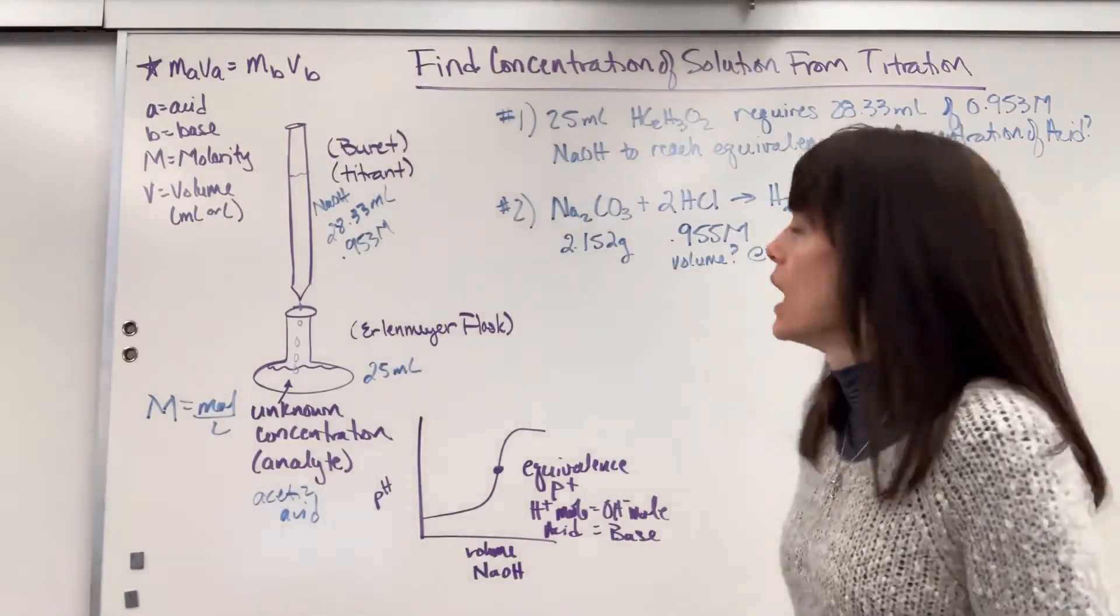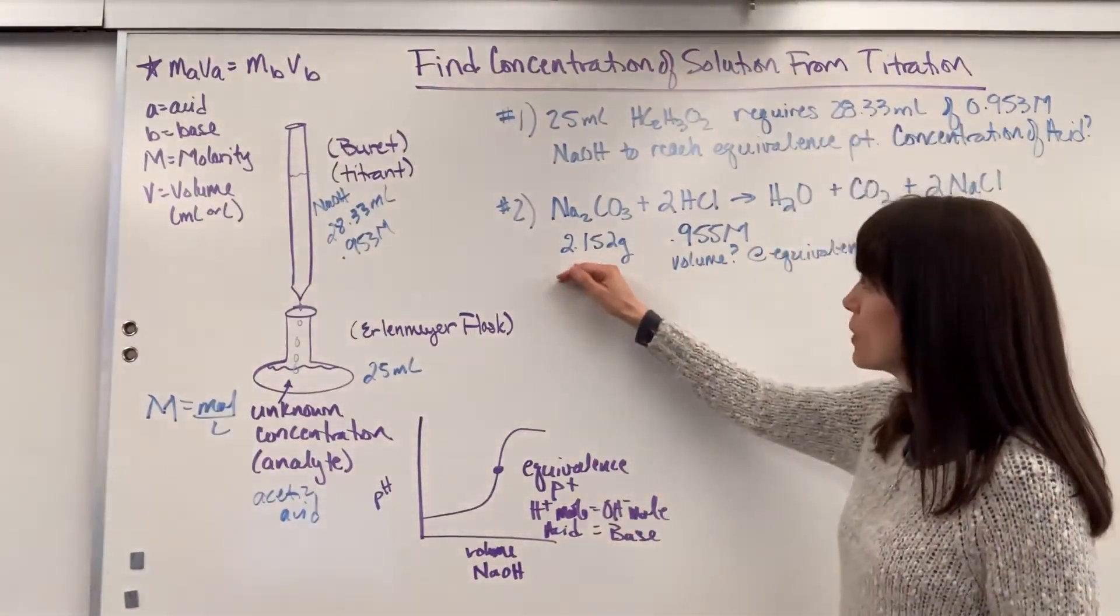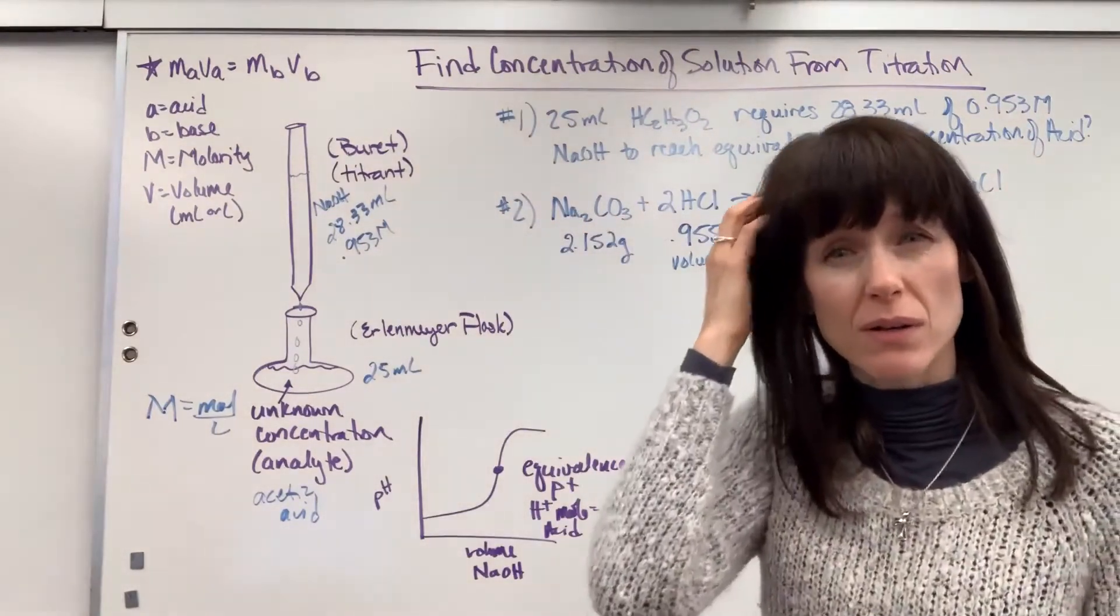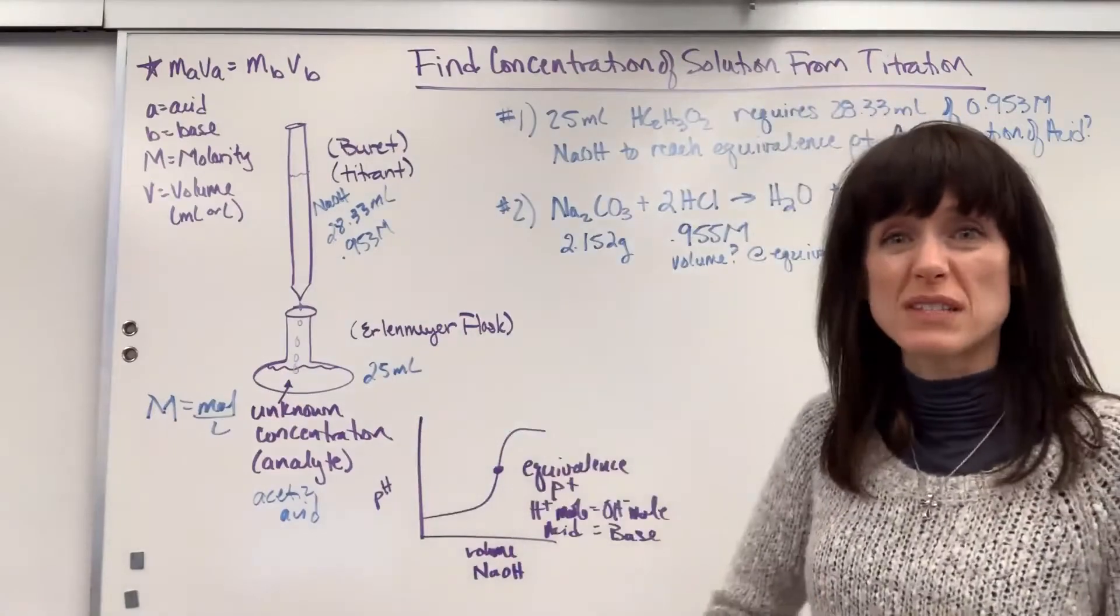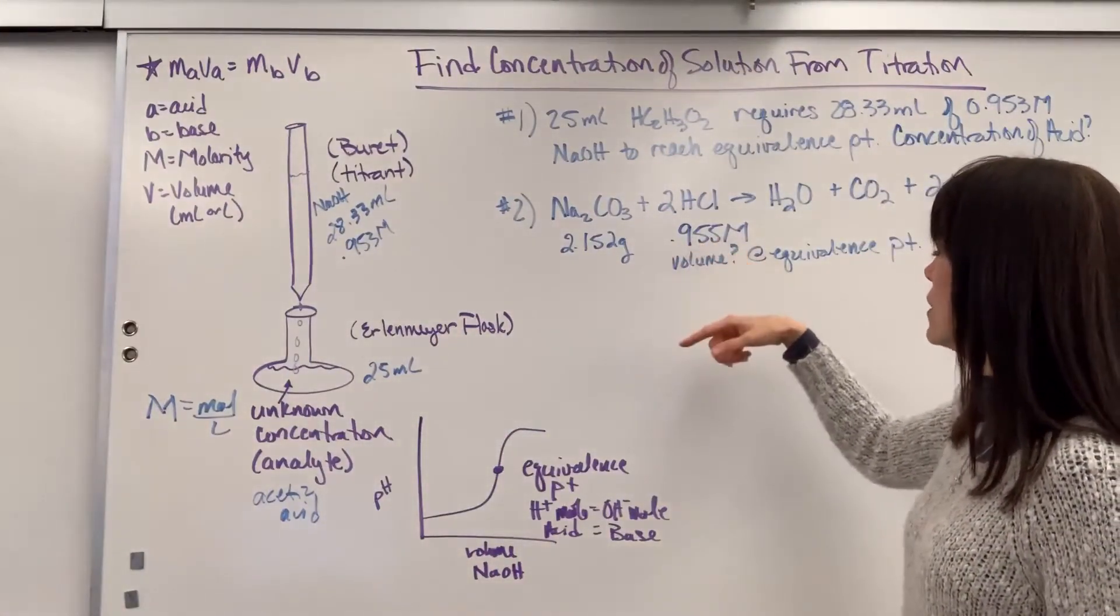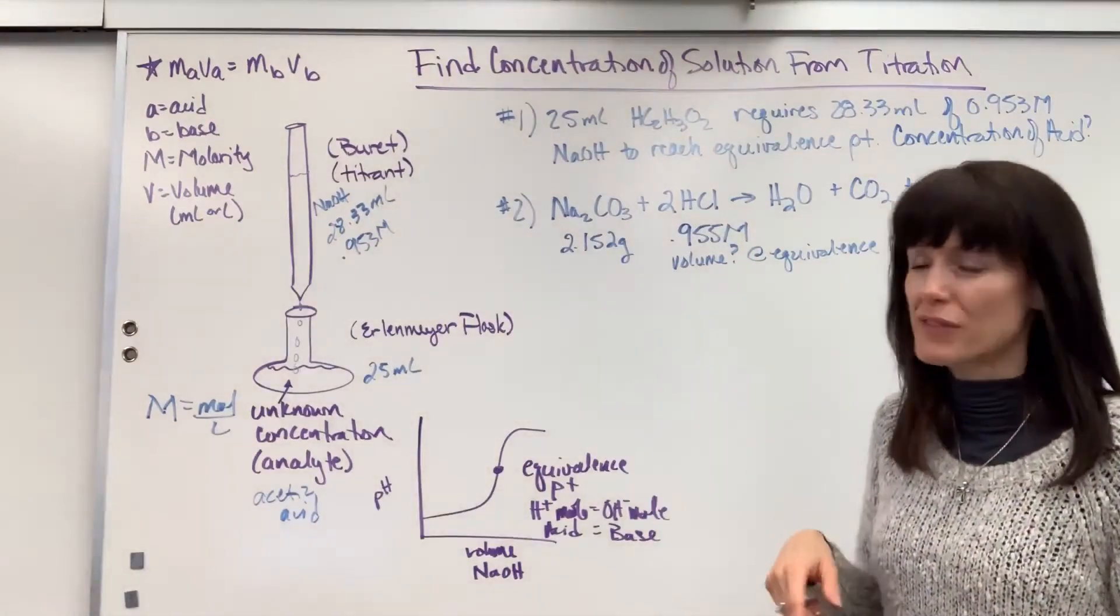So here's what they give us. They say you start with 2.152 grams of this sodium carbonate. So we actually have a powder. We're going to pour this acid on it, and the acid is 0.955 molar. And it's saying, what's the volume? How much did you have to pour?